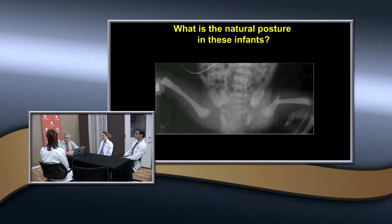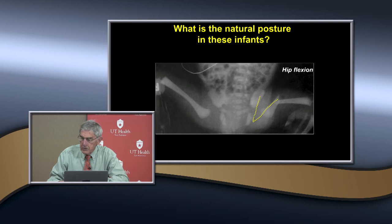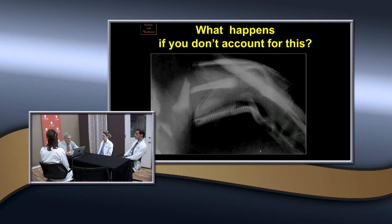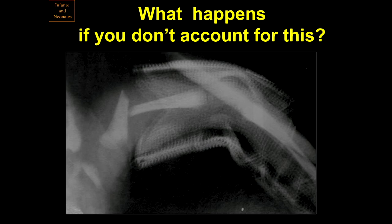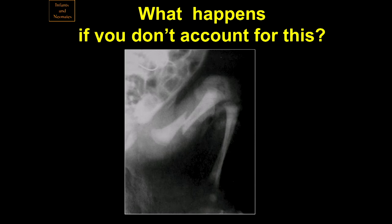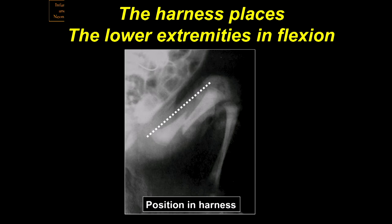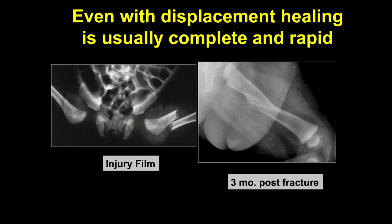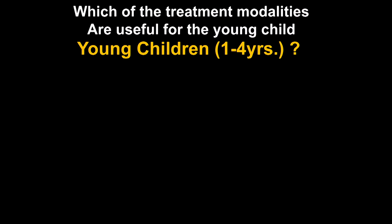What's the natural posture in infants? The hip is flexed—that's the way it was in the uterus. What happens if you don't account for that? You get an apex anterior deformity. Here's one where they thought they'd put a cast on—the cast is not long enough and it's hard to control the proximal fragment. But if you put them in the Pavlik harness, you can get the lower extremities in flexion and align the fragment well. Even with displacement, healing is usually complete and rapid. We used to say that in infants, if you get the bones in the same extremity, they'll heal.